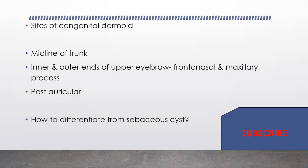How will you differentiate it from a sebaceous cyst? You differentiate by punctum on inspection — sebaceous cysts are fixed to the skin while dermoid cysts are not. However, in the case of a scalp sebaceous cyst, it is also fixed to the scalp and there is no punctum, so it is hard to differentiate. Therefore, site is very important: if you find any midline swelling or any swelling near a fusion line, you may say it is dermoid rather than sebaceous cyst, as that is easier to defend.